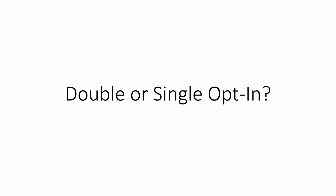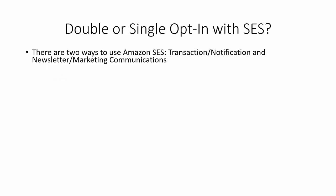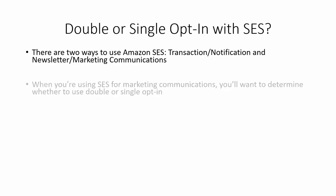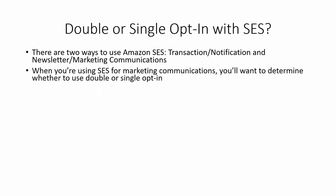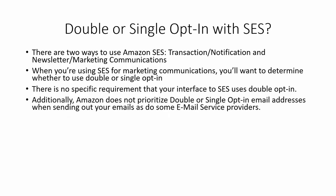You will be faced with the question of whether to use double or single opt-in with Amazon SES. There are two ways to use Amazon SES: transactional/notification emails or marketing communications. When using SES for marketing communications, you'll want to determine whether to use double or single opt-in. There is no specific requirement that the interface you're using with Amazon SES uses double opt-in, so you can do single opt-in.